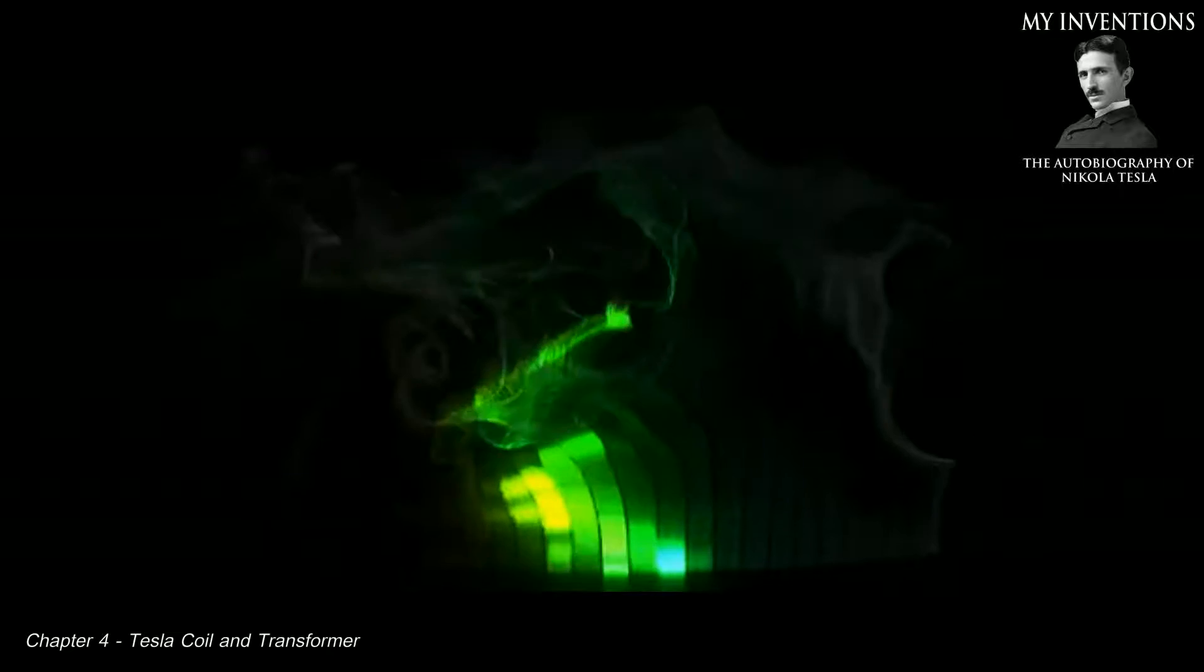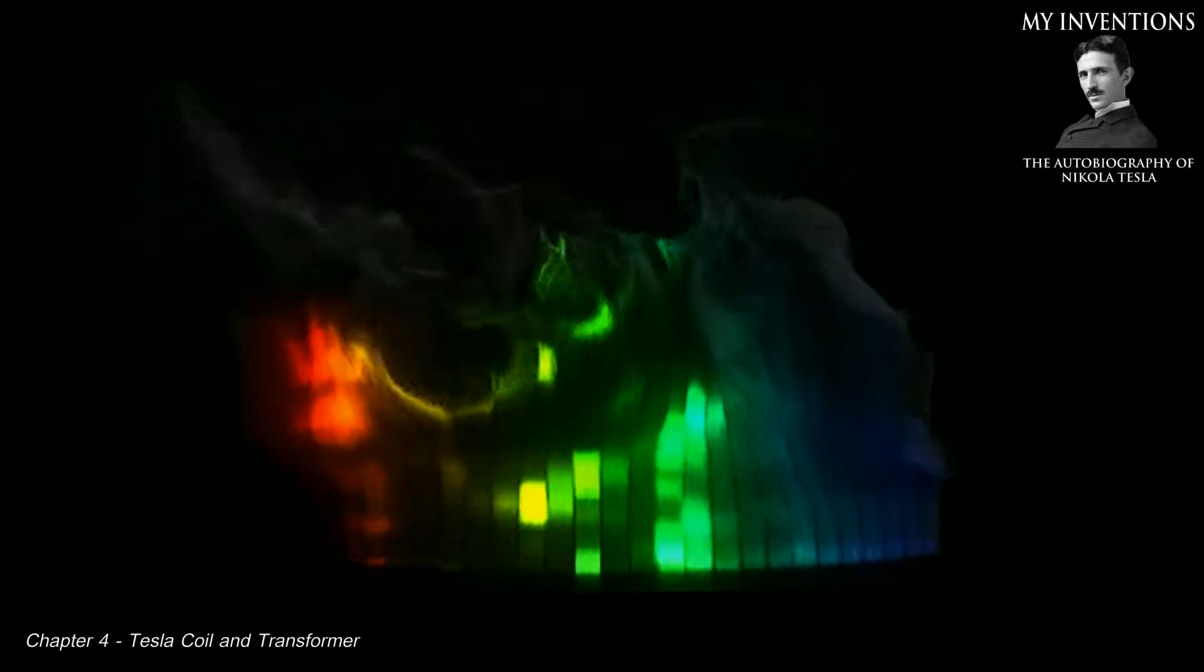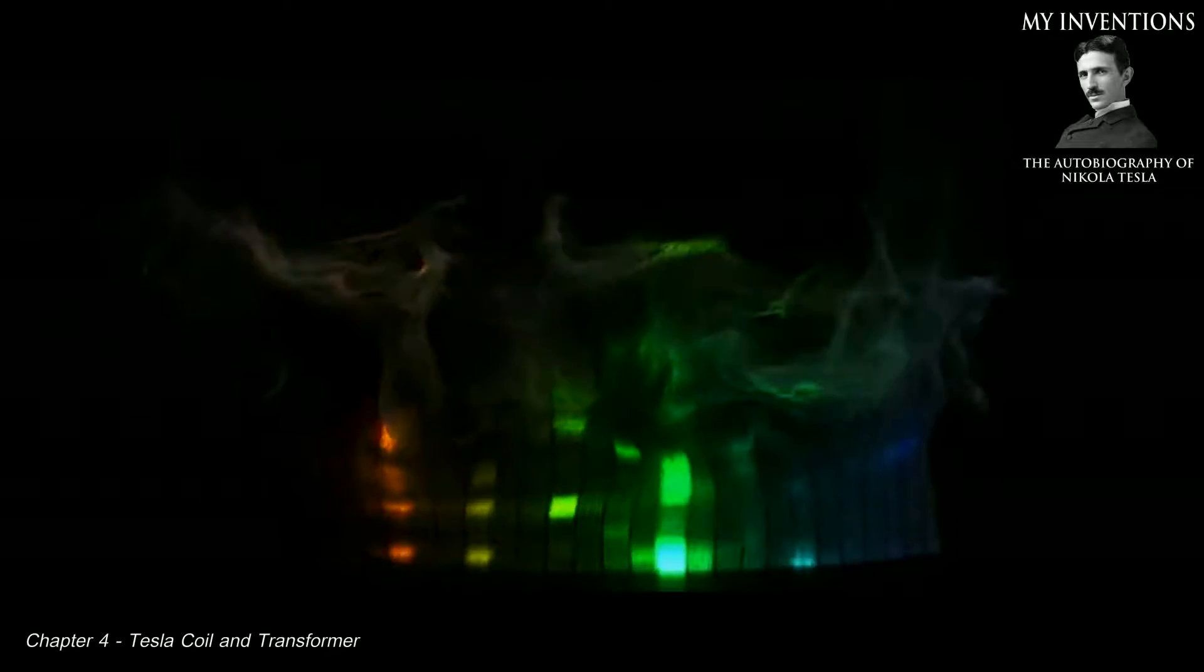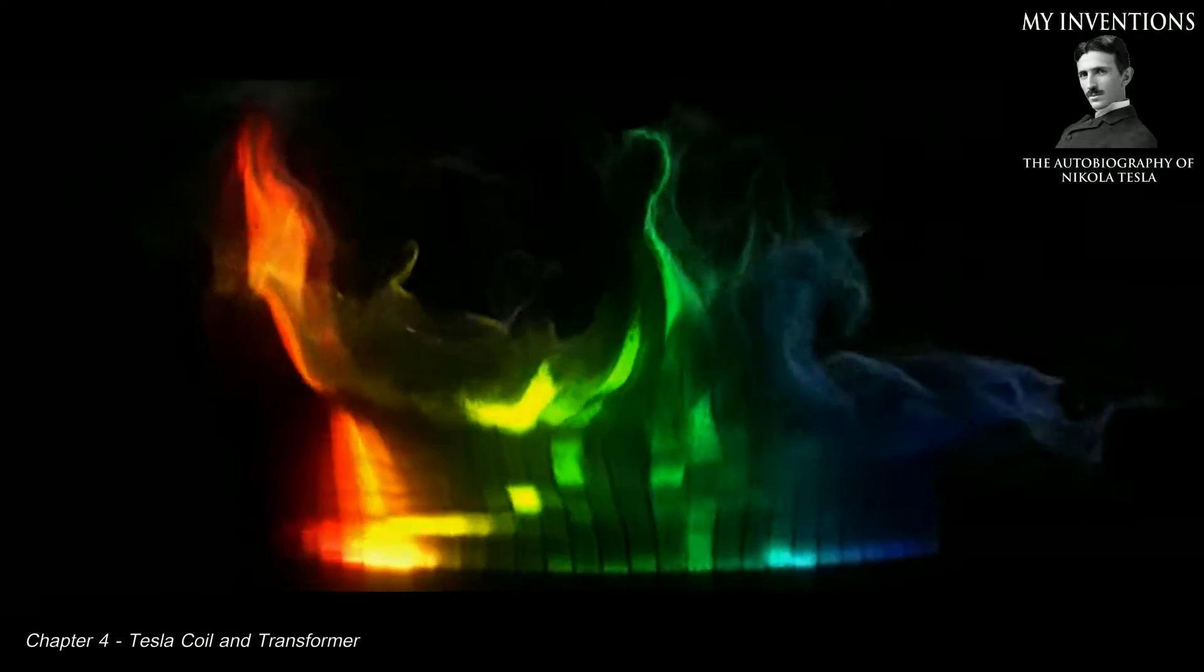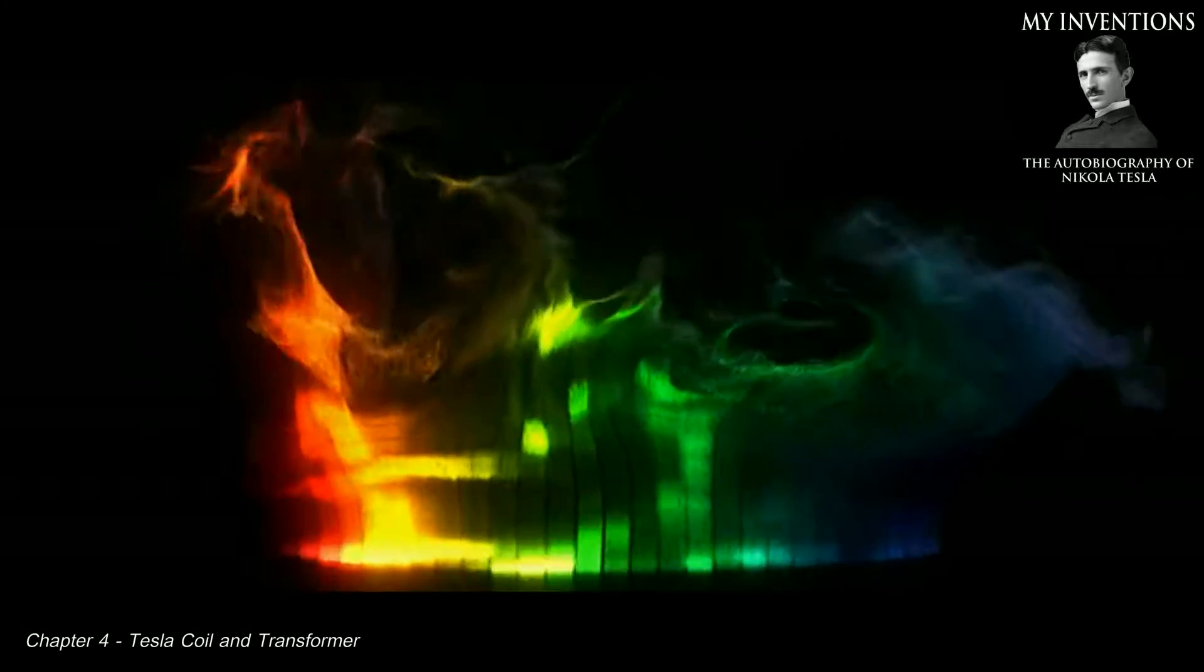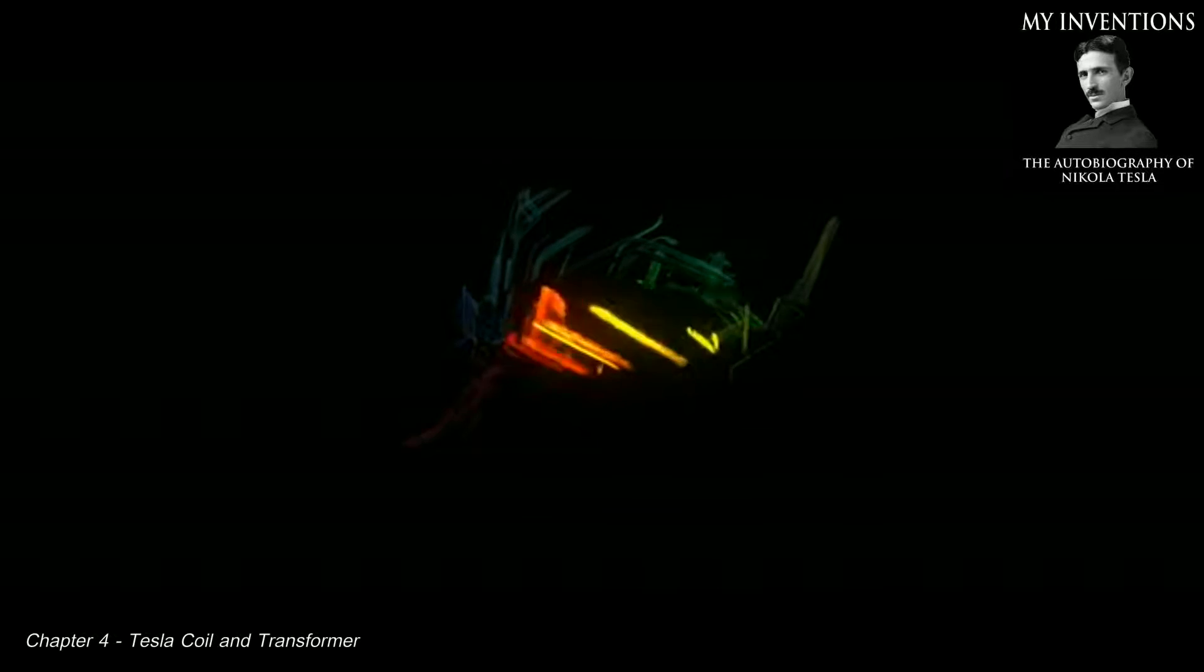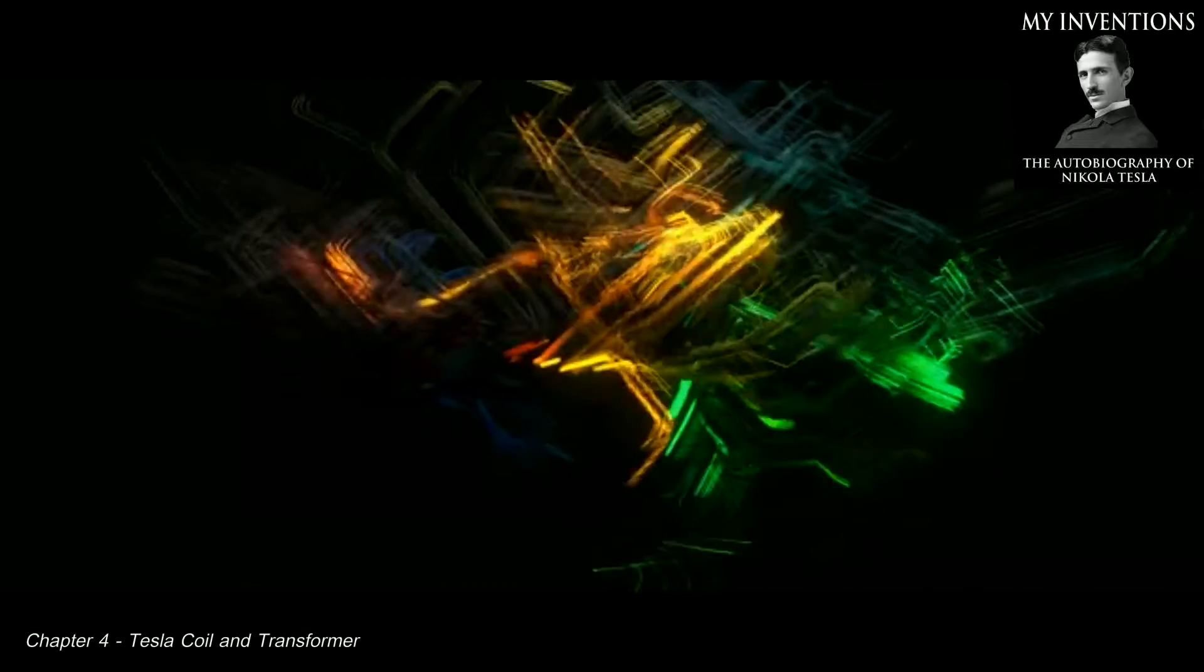But great difficulties had still to be overcome. My system was based on the use of low-frequency currents, and the Westinghouse experts had adopted 133 cycles with the objects of securing advantages in transformation. They did not want to depart with their standard forms of apparatus, and my efforts had to be concentrated upon adapting the motor to these conditions. Another necessity was to produce a motor capable of running efficiently at this frequency on two-wire, which was not an easy accomplishment. At the close of 1889, however, my services in Pittsburgh being no longer essential, I returned to New York and resumed experimental work in a laboratory on Grand Street, where I began immediately the design of high-frequency machines.